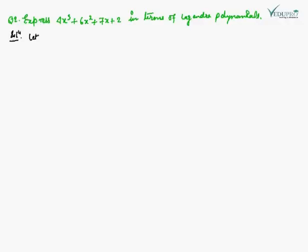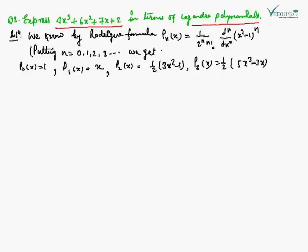Our next example is: express 4x³ + 6x² + 7x + 2 in terms of Legendre polynomials — that is, how a polynomial can be expressed as a combination of Legendre polynomials.